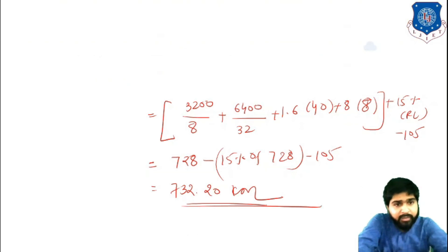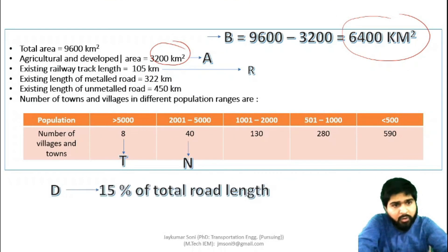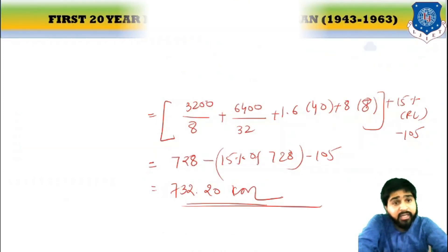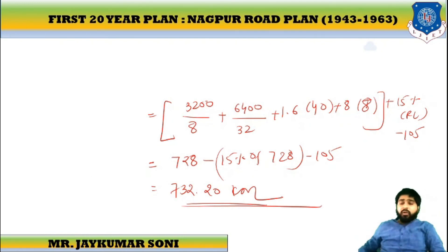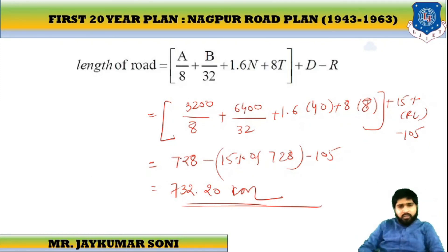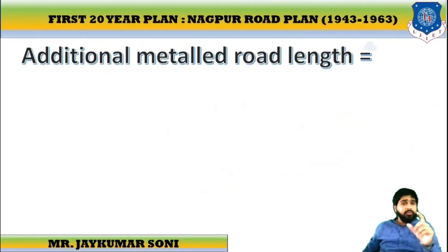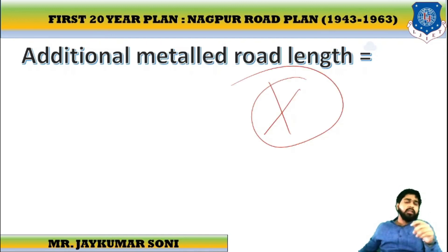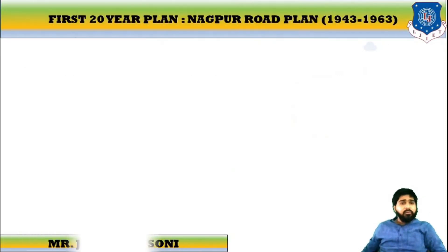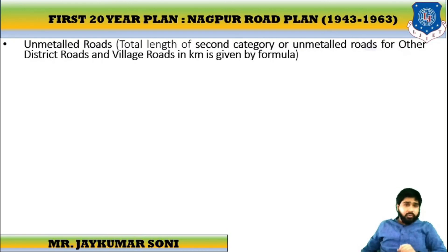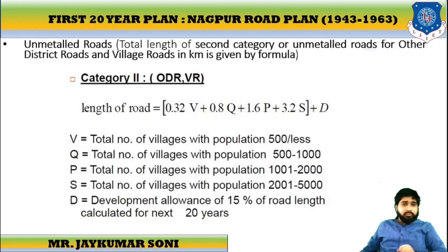In this example, you are not asked to calculate the additional length, so you only need the total length. The total metal road length is approximately 732 km. Now for unmetal road: the equation for unmetal road is applied similarly.